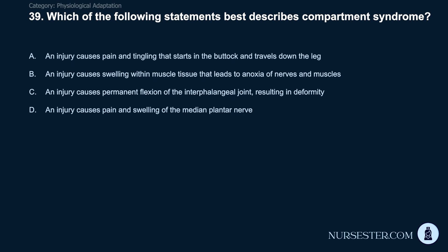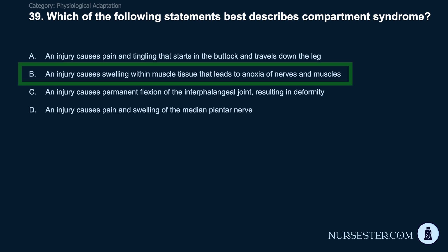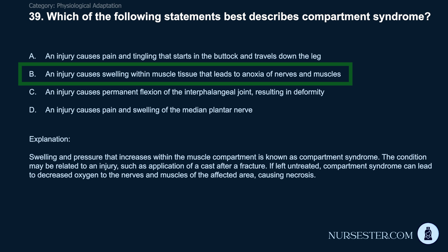Question 39: Which statement best describes compartment syndrome? A) Pain and tingling starting in the buttock traveling down the leg. B) Swelling within muscle tissue that leads to anoxia of nerves and muscles. C) Permanent flexion of the interphalangeal joint resulting in deformity. D) Pain and swelling of the median plantar nerve. Correct answer: B. Swelling within muscle tissue that leads to anoxia of nerves and muscles. Swelling and pressure increasing within the muscle compartment is known as compartment syndrome. It may be related to injury such as application of a cast after a fracture. If untreated, it can lead to decreased oxygen to nerves and muscles, causing necrosis.